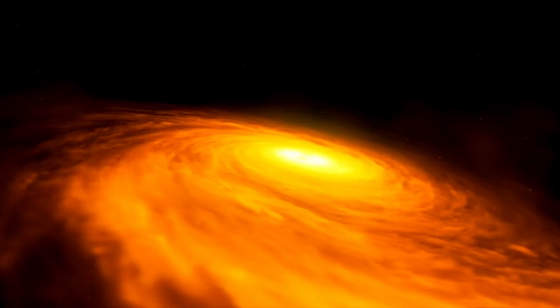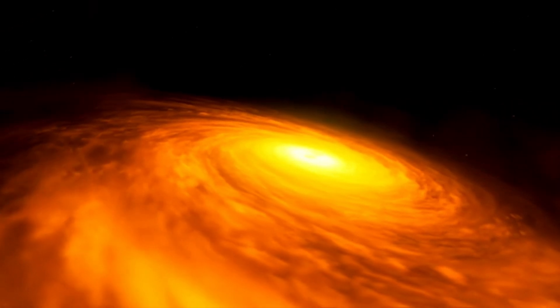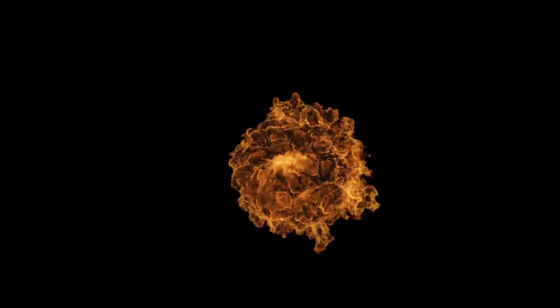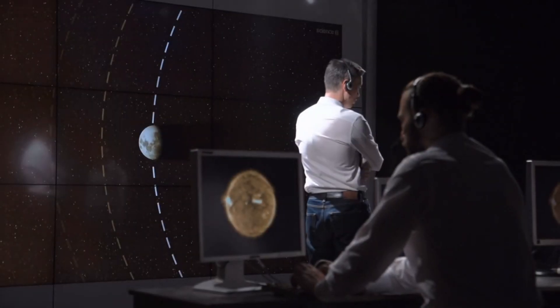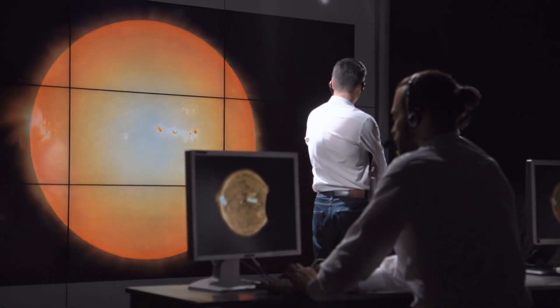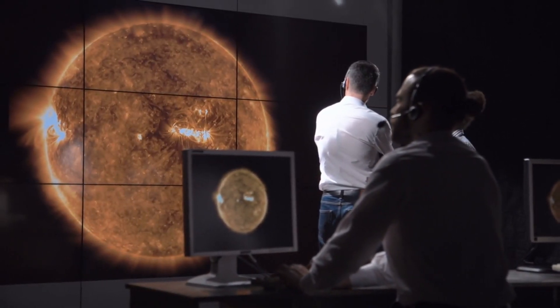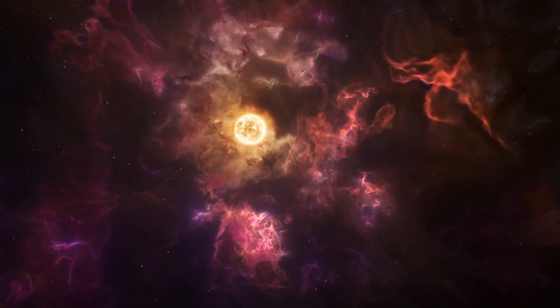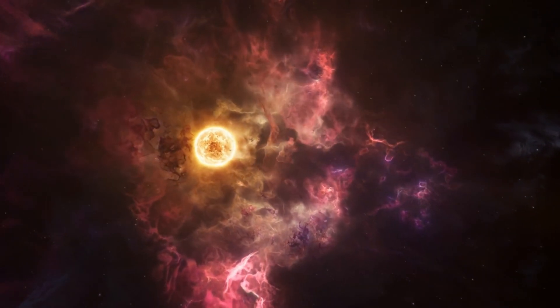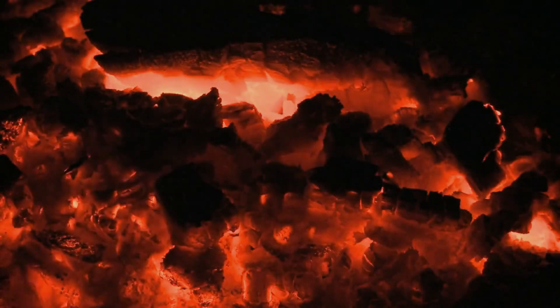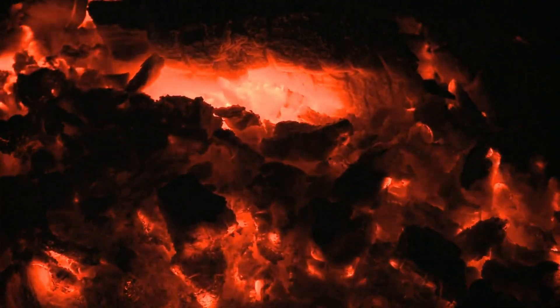Interestingly, Solar Cycle 25, the current cycle we are experiencing, has been anything but predictable. For years, scientists anticipated a relatively calm cycle, but instead, they have witnessed an active and intense phase, with sunspots and solar flares appearing in abundance. The cycle has already exceeded expectations in terms of solar activity, and as of August 2024, the average sunspot number was recorded at 299, more than double the forecasted amount.